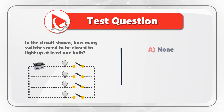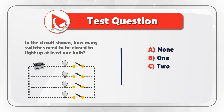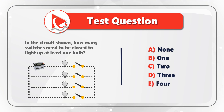Choice A: none. Choice B: one. Choice C: two. Choice D: three. And last but not least, Choice E: four switches.